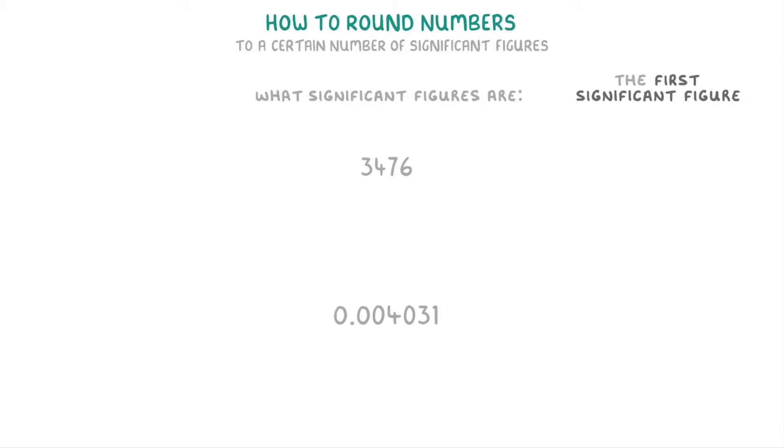The first significant figure of a number is the first non-zero digit as you read the number from left to right. So in 3476, the three is the first significant figure because that's the first digit reading from left to right and importantly it's not a zero.